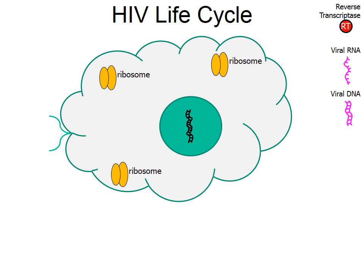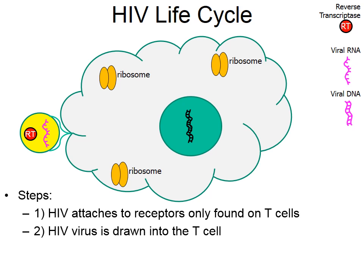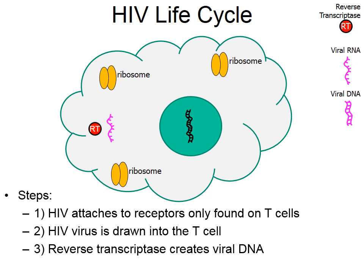Let's look at the HIV life cycle — how the HIV virus goes about replicating and infecting. The white blob in the picture is a T cell. The HIV virus will only attach to receptors found on T cells. Here comes the HIV virus in yellow, attaching to a receptor on the surface of a T cell. What happens next is the host cell — the T cell — draws the virus inside. Notice how the capsid dissolves, exposing the RNA of the virus and the reverse transcriptase labeled RT. Reverse transcriptase is an enzyme that directs transcription in reverse — normally DNA is converted into RNA, but reverse transcriptase does the opposite.